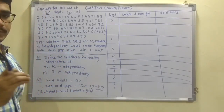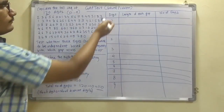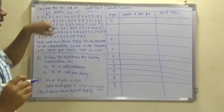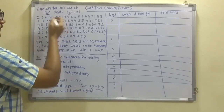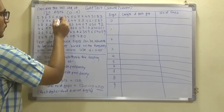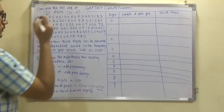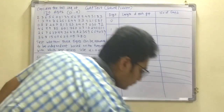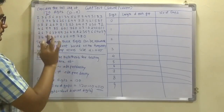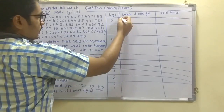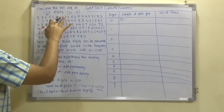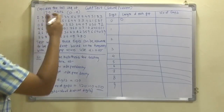Now prepare a table based on step 2: each digit from 0 to 9, the length of each gap, and the number of gaps. For digit 0, the first 0 appears and the very next digit is also 0, so the length of the gap between those two 0s is 0 — if there was a 1 between them it would be 1, but since it is immediate, the gap length is 0.